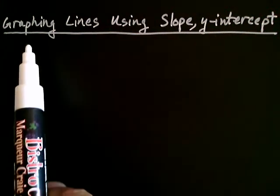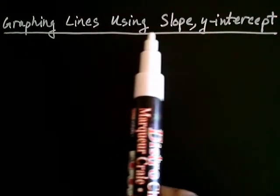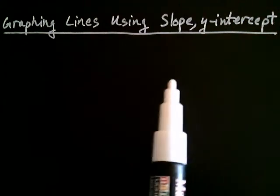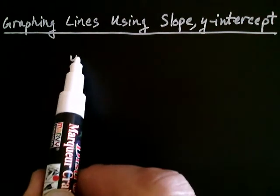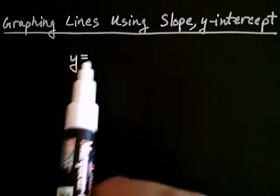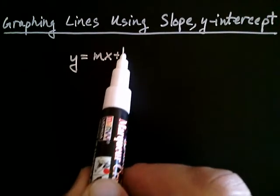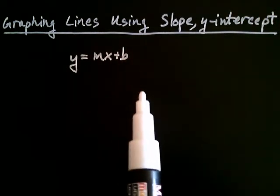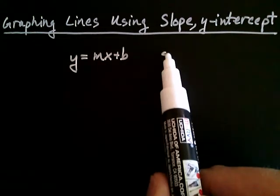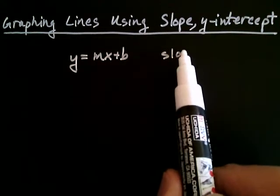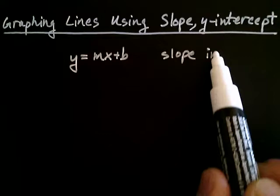In this video, we're going to be graphing lines using the slope and the y-intercept. Recall that we have a special form of a line, y equals mx plus b. This is called slope-intercept form.